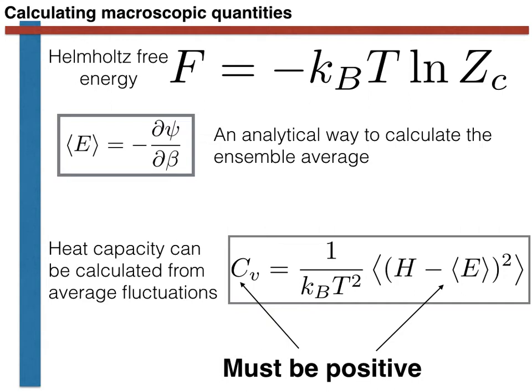Furthermore, we have seen that statistical mechanics relates the heat capacity to a second derivative of the partition function, and that this second derivative is related to the fluctuations in the energy. We have thus seen that the probabilistic formalism of statistical mechanics is fully consistent with the second law of thermodynamics.